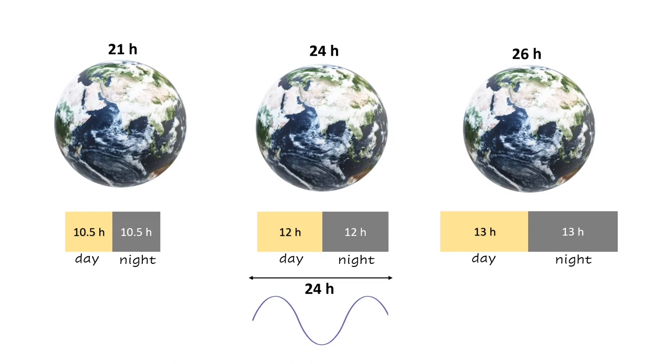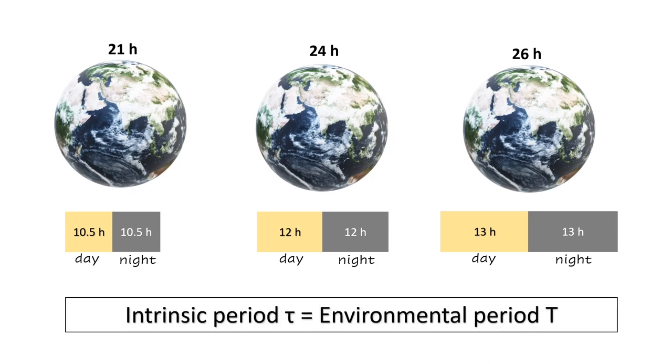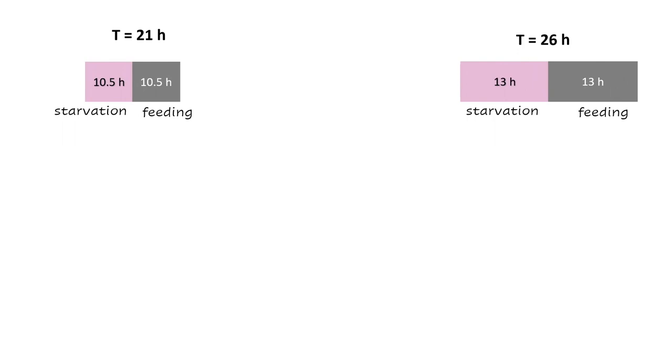speeding up or slowing down light-dark cycles also speeds up or slows down the activity-rest rhythms of flies. Hence, when light is the time cue, there is perfect match between the intrinsic clock period tau and the environmental period T. We performed the same experiment with feeding-starvation cycles instead of light-dark cycles and either sped up or slowed down these cycles.